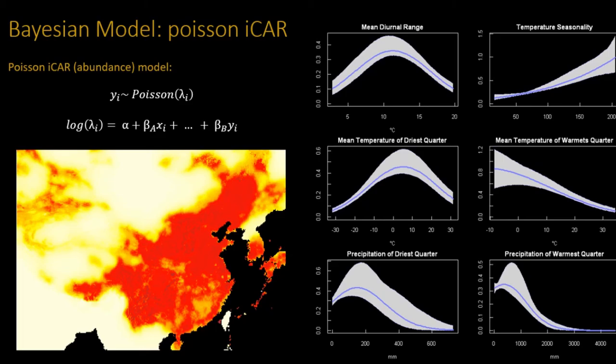These are the response curves of various environmental factors together with the envelope, and you can see they are much more narrow — the model is much more certain about how buckwheat responds to the environment. The mean temperature of the dry quarter curve is very similar to the one estimated by Maxent, showing quite a wide range of temperatures that are suitable. This makes ecological sense because buckwheat is known to thrive in a quite wide range of temperatures, specifically between about 10 and 30 degrees. And there is also much more certainty about the effects of precipitation compared to the other models.